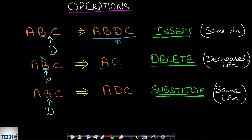There is another operation called the substitute operation, also known as the replace operation. If we are given string ABC and want to replace character B with character D, we can do it at once and the string will be ADC. The string remains the same length, but B has been replaced with D. So: insert increases length by 1, delete decreases length by 1, and substitute keeps the length the same.